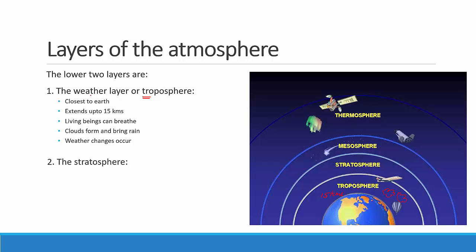The next layer just above the troposphere is called as the stratosphere. It lies just above the troposphere as we can see in the diagram. It is about 35 kilometers thick — so when the troposphere is 15 kilometers, the stratosphere is 35 kilometers thick. This is the region where jet planes fly, taking off into the stratosphere. So this is the zone of the jet planes.